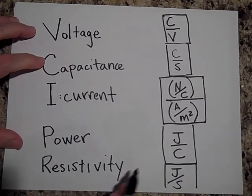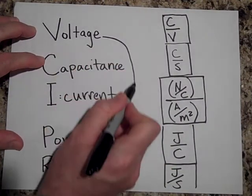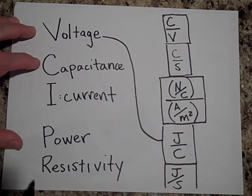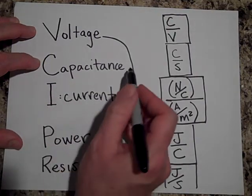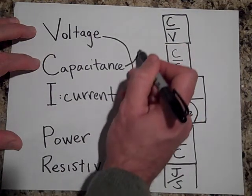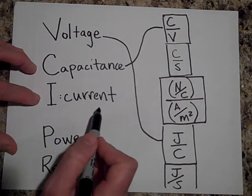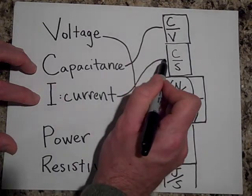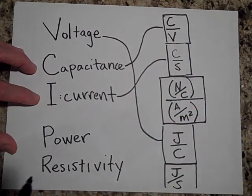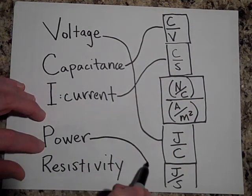Okay, so voltage is joules per Coulomb. Capacitance is going to be Coulombs per Volt. Current is Coulombs per second. Power is joules per second.